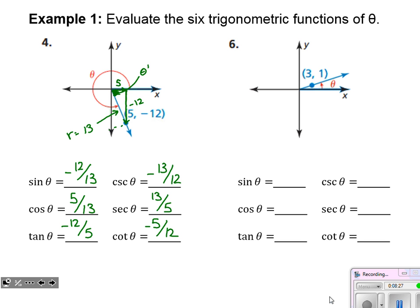For problem six, this point doesn't come out as a perfect Pythagorean triple. If I drop the point (3, 1) directly down to the x-axis, since it's in quadrant one there's no separate reference angle — the angle itself is what we want. My x-coordinate is 3, my y-coordinate is 1, and using the Pythagorean theorem, that radius is the square root of 10. So my sine value, opposite over hypotenuse, is 1 over root 10, which if I rationalize becomes root 10 over 10.